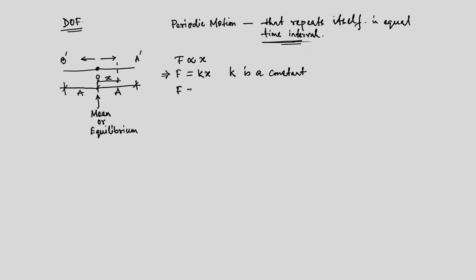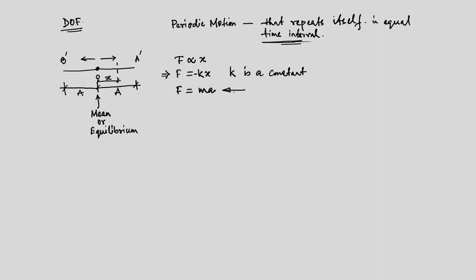We also know that f is equal to m times a (acceleration). One important point: the magnitude of force f equals kx, but it acts in the opposite direction of the deformation — that is how the particle comes back to its mean position. Combining these two: mass times acceleration equals minus k times x, so acceleration a equals minus k/m times x. We call k/m equal to omega squared.